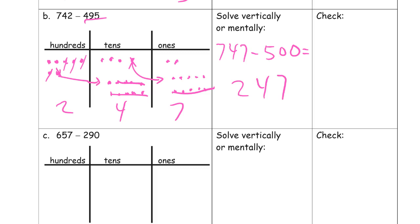And I'll check that with vertical addition. 495 plus 247. When you do your vertical math, make sure you start with the ones digits first. And you've got to show these composed tens and hundreds.